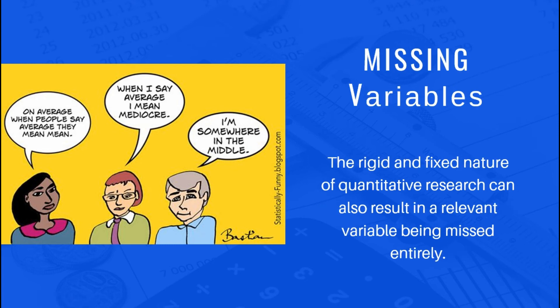Second is missing variables. The rigid and fixed nature of quantitative research can also result in a relevant variable being missed entirely. If someone was conducting a qualitative study into the intelligence levels of children and trying to determine whether firstborn children are more intelligent than all subsequent children, they may measure children's IQ and then note whether they are firstborn, second, third, or fourth.